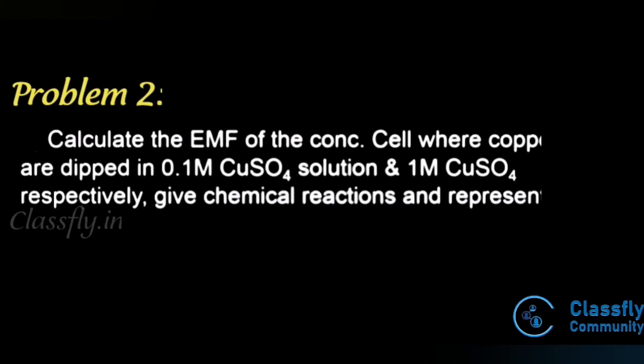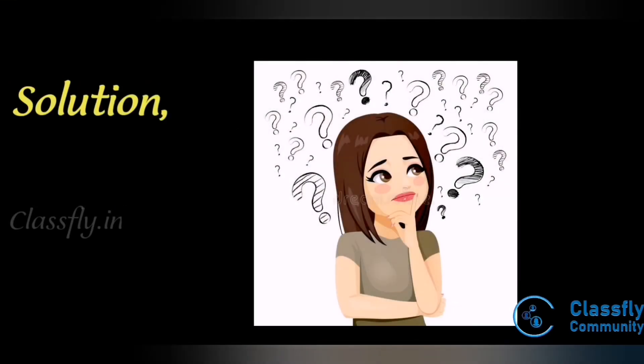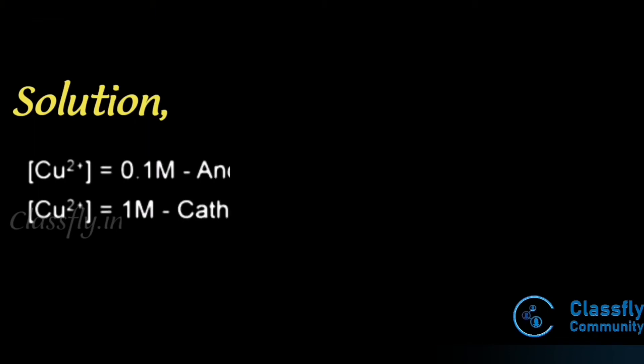The second problem: calculate the EMF of a concentration cell where copper rods are dipped in 0.1 M copper sulfate solution and 1 M copper sulfate solution respectively. No cell representation is given, so we start from the given data: [Cu²⁺] = 0.1 M and [Cu²⁺] = 1 M.